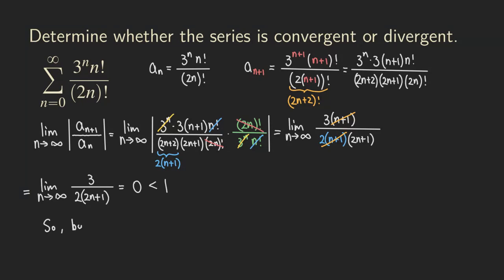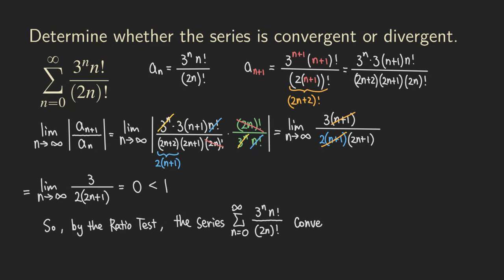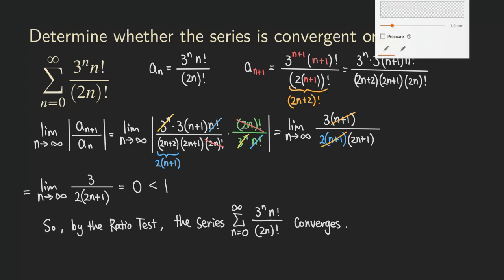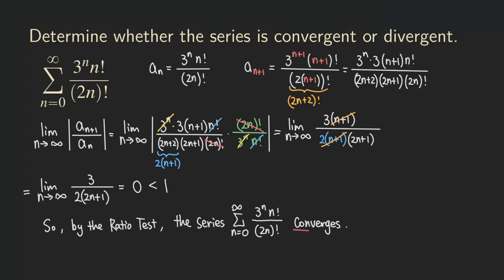So by the ratio test, the series with general term 3^n times n factorial over (2n)! converges. That's it for this problem — it's actually a simple problem. Thank you for watching this video, I'll see you next time.